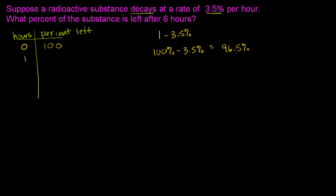So each hour, we're going to have 96.5% of the previous hour. So in hour 1, we're going to have 96.5% of hour 0, or 0.965 times 100, times hour 0.